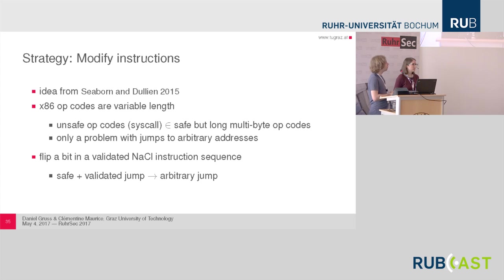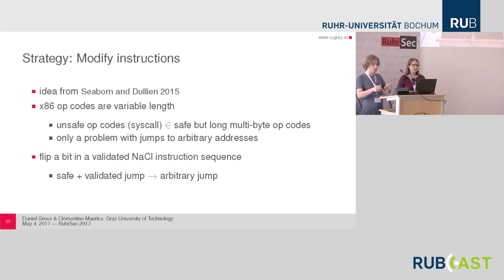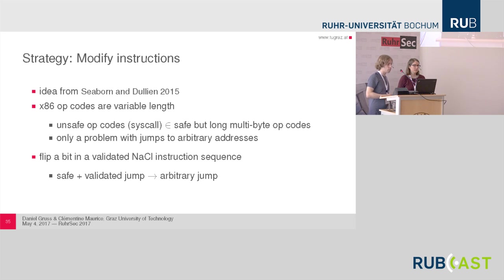The first exploitation strategy was presented by Seaborn and Dullien to escape from the Google NaCl sandbox. They exploited the fact that x86 opcodes have variable length, and sometimes unsafe opcodes not allowed by the sandbox are contained in longer multi-byte opcodes. Once you corrupt a jump, you might be able to jump to a non-aligned address within an opcode and use a syscall opcode to escape from the sandbox. They flipped a bit in a validated NaCl instruction sequence, gained the capability of an arbitrary jump, and could do anything in the sandbox.